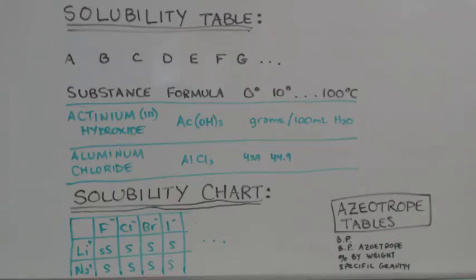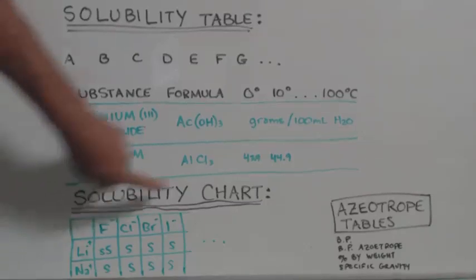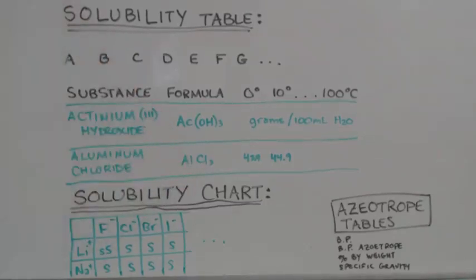Now, another solubility thing they have on Wikipedia. You can plug in solubility chart. And what it does is it gives you a little grid. Gives you cations going up and down. Anions going horizontal.